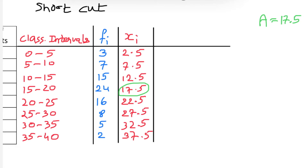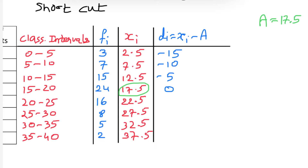After assuming a mean of 17.5, we find the deviation di of all xi values from the assumed mean by subtracting 17.5 from each xi. The value at 17.5 gives di = 0. All xi values below 17.5 give negative differences: −5, −10, and −15. Values above 17.5 give positive differences: 5, 10, 15, and 20. The decimal part is removed in these deviations.